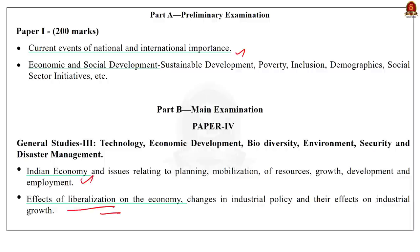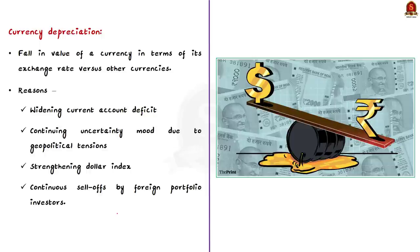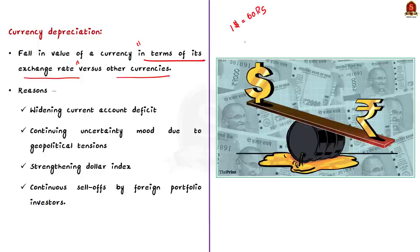Currency depreciation is the fall in the value of a currency in terms of its exchange rate versus other currencies — here, 'exchange rate' is the keyword. For example, if yesterday $1 equals ₹60 and the next day $1 equals ₹70, the value of the rupee is falling compared to the dollar. So in this example, the rupee has depreciated. Note that it need not necessarily be the dollar; it could be any foreign currency.